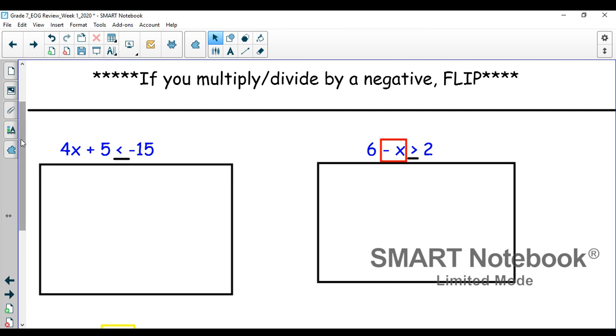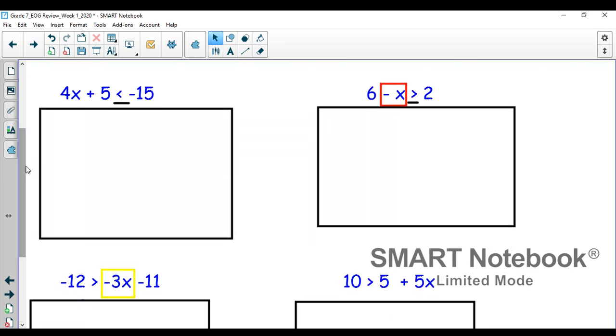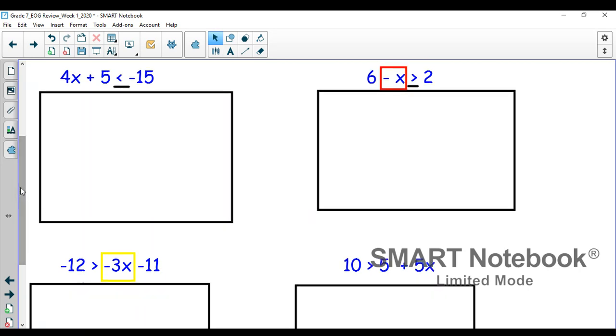So in the four examples you see in front of you, the way I started this off is any of the examples that had a negative coefficient, I went ahead and boxed that coefficient because that lets me know that eventually at the end of the problem, I'll need to flip the sign. So once you recognize that, the rest of this is extremely easy.